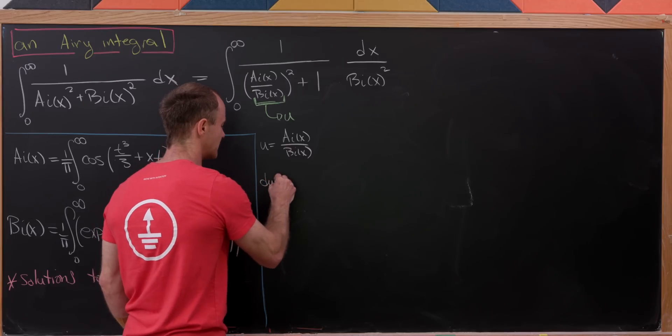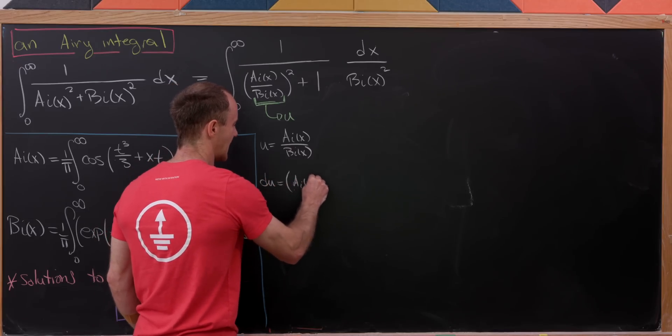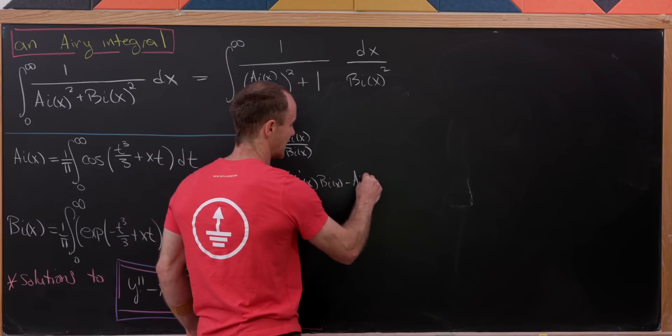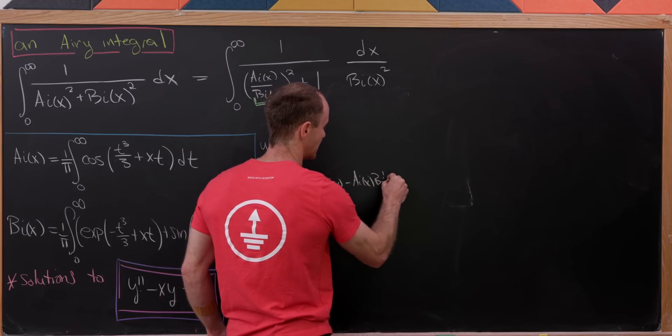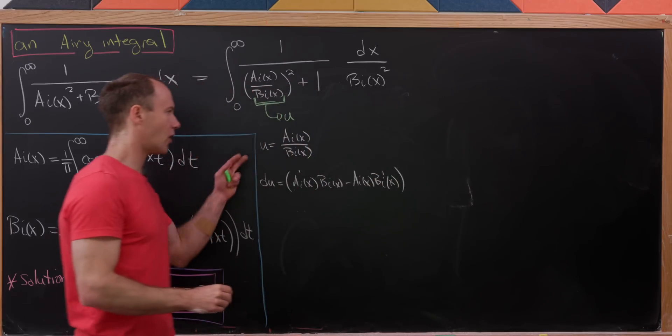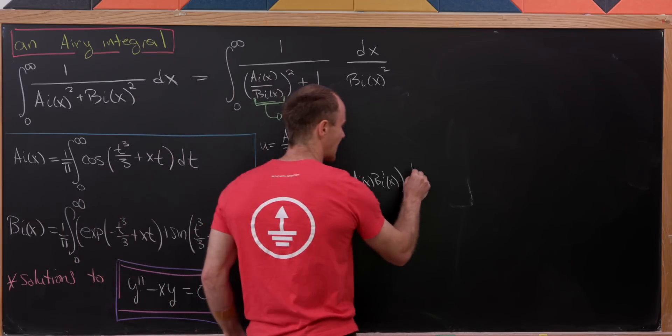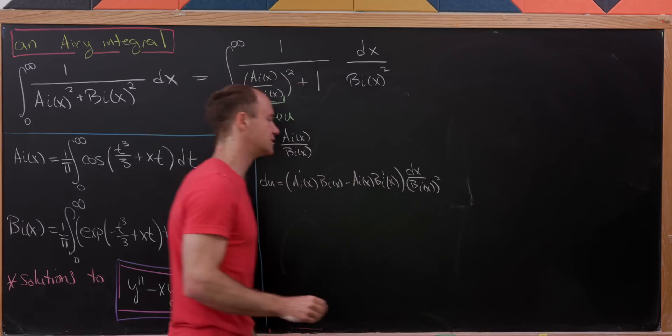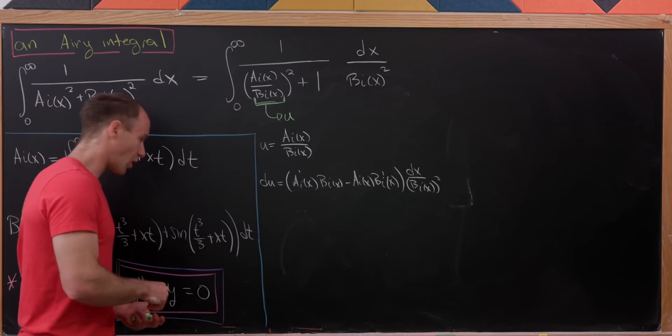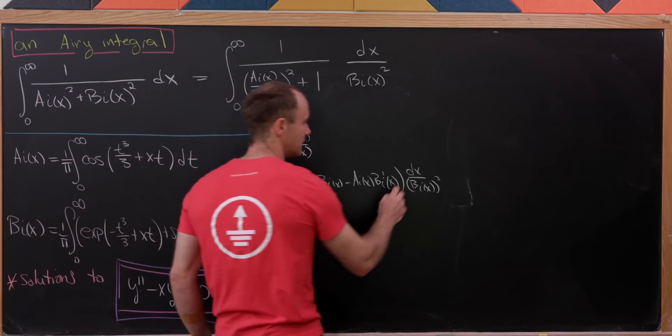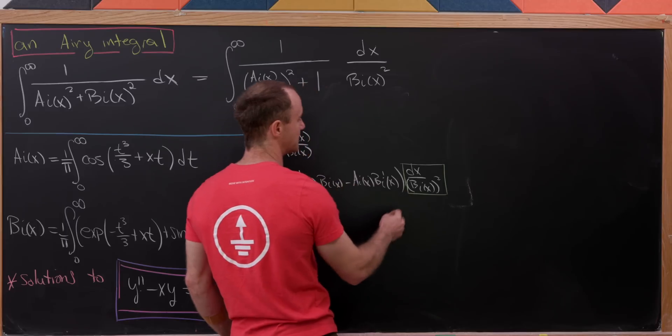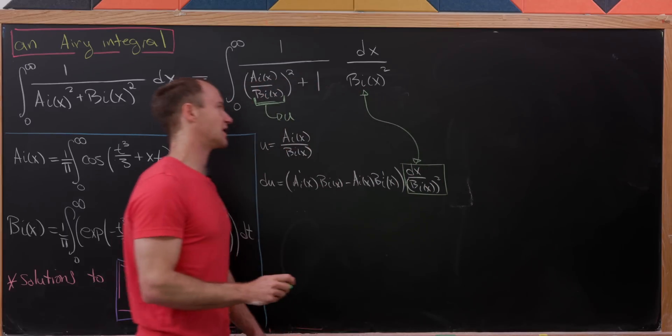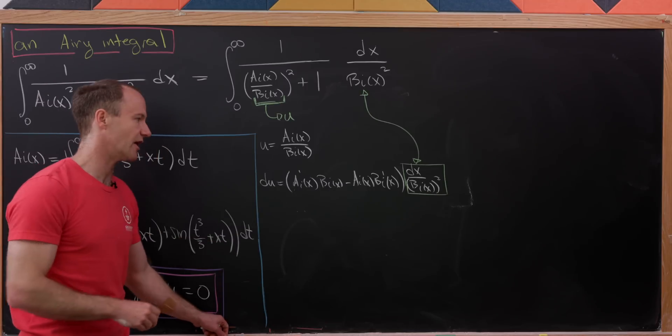We're taking the derivative. That's going to give us AI prime times BI of x minus AI of x times BI prime of x, all over BI squared, but I'm going to rewrite that as dx over BI of x squared. So I use the quotient rule there. But we're already in good shape because this dx over BI squared is exactly equal to this thing up here, which is in the integral. Now we just have to take care of this other bit.